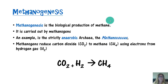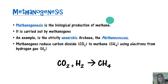In methanogenesis, these are anaerobic archaea that are methane producers, like the ones that exist in the rumen of cows. Methanogenesis is the biological production of methane — a byproduct of microbial metabolism for these methanogens. One archaea that undergoes methanogenesis is Methanococcus. Methanogens metabolize by reducing carbon dioxide to methane using electrons from hydrogen gas.